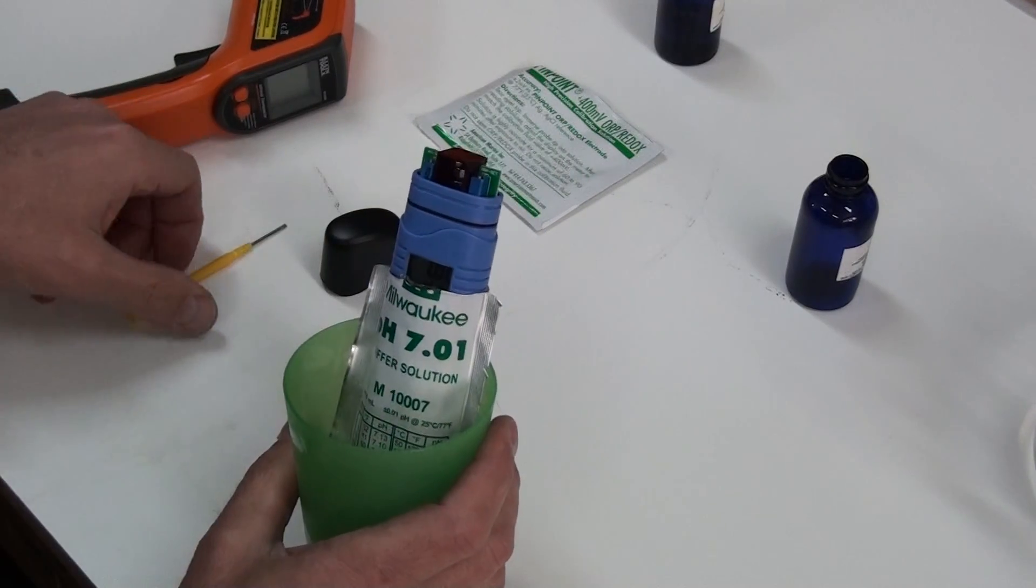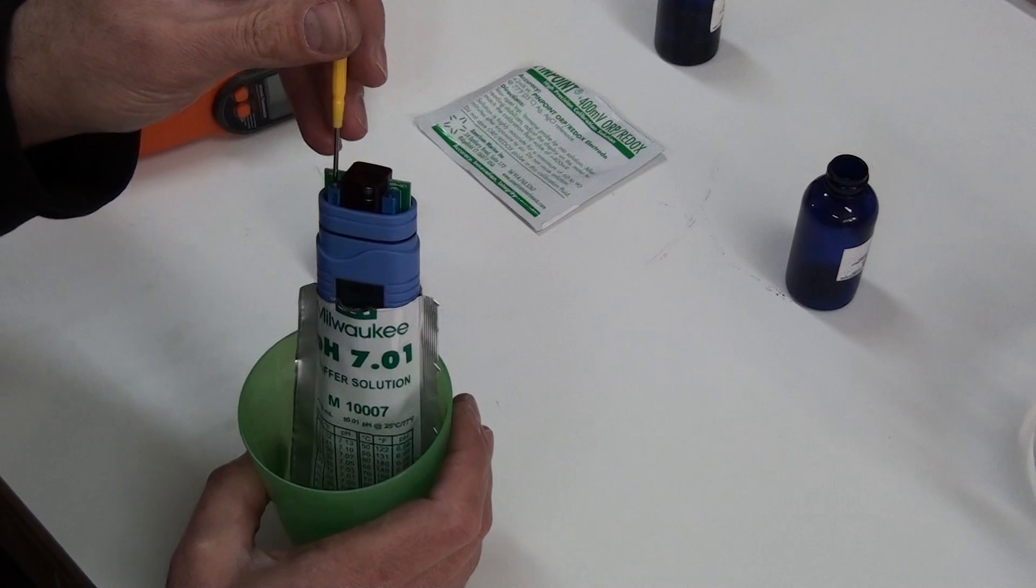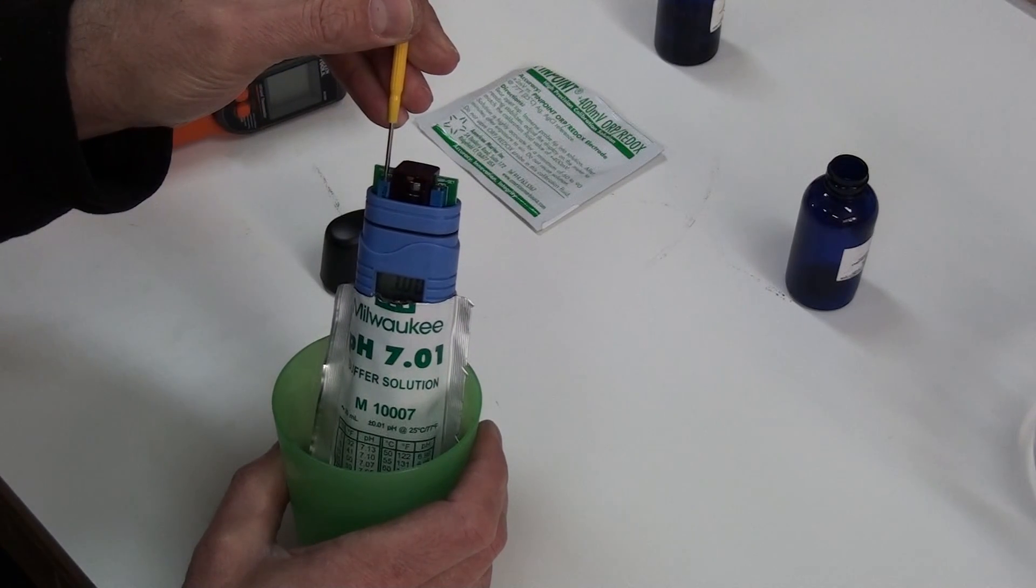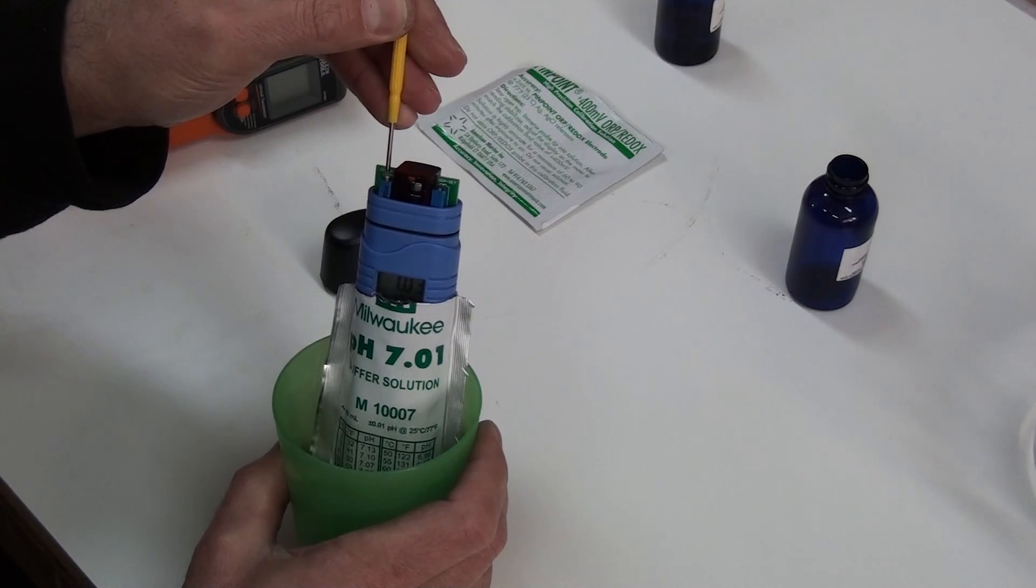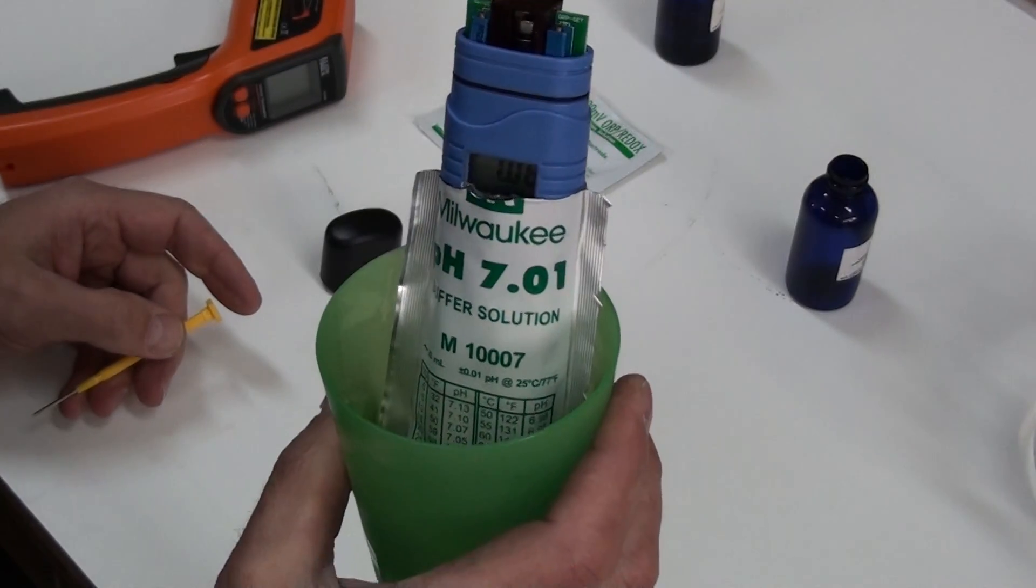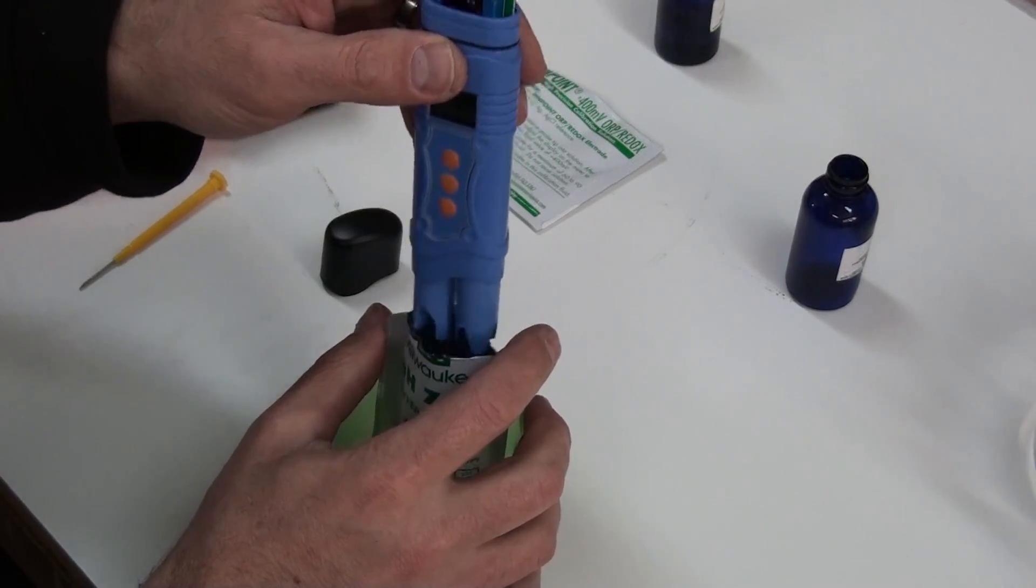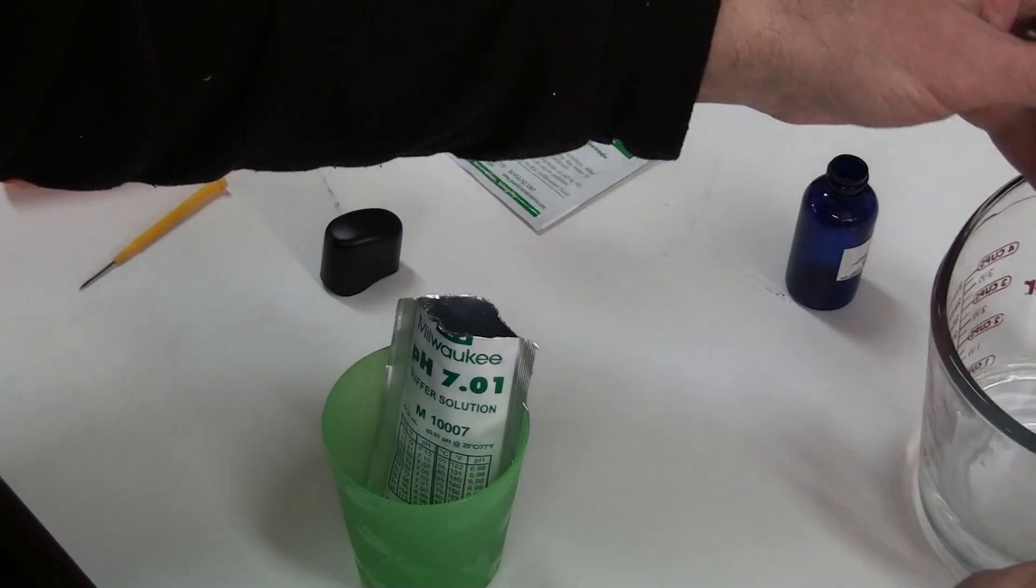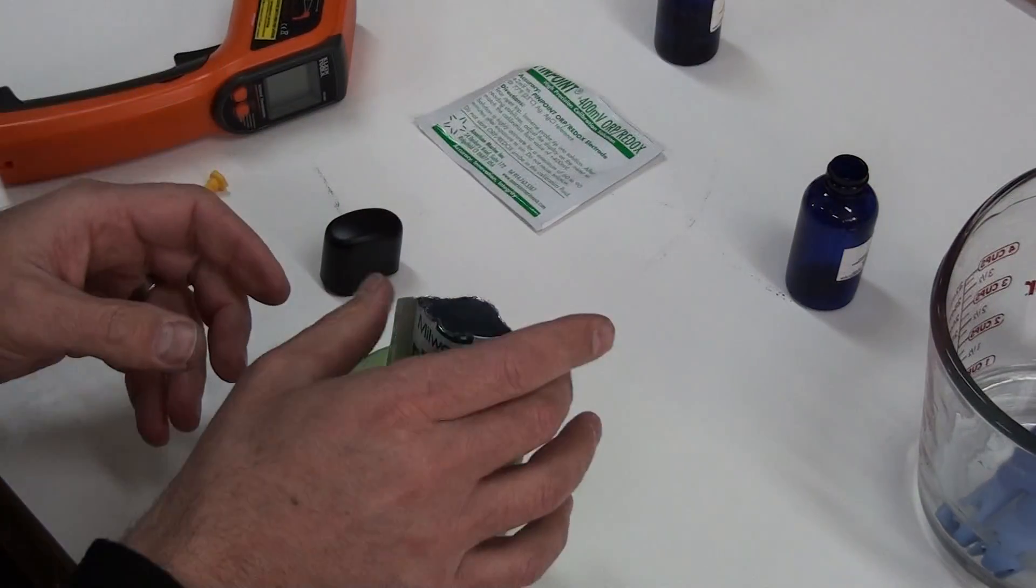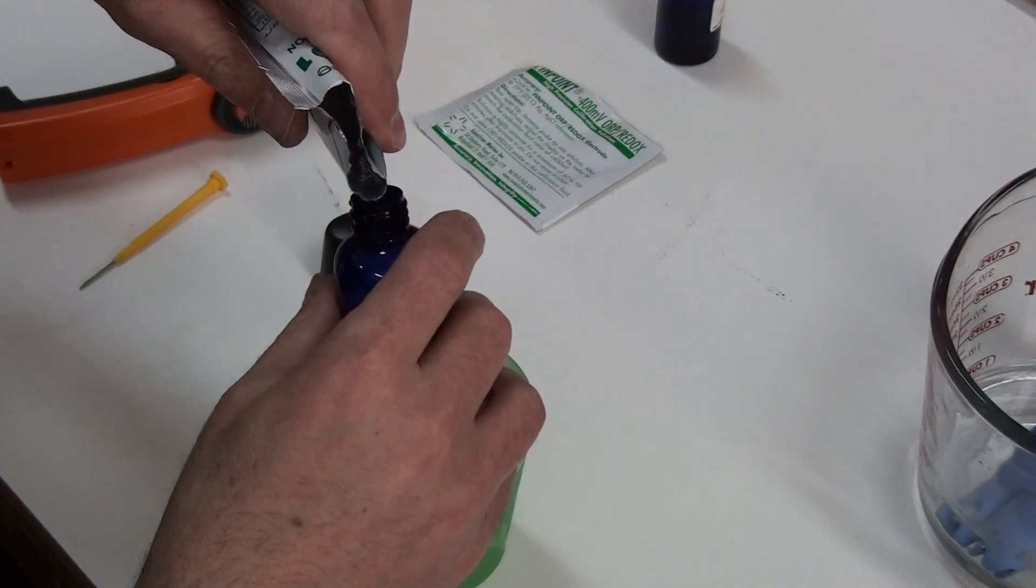It's showing 7 right now. So I will adjust this to 7.06. You can see it's at 7.06 and that's considered calibrated. We'll go ahead and wash this off in some distilled water. And pour this region back into the container so I could use it next time.